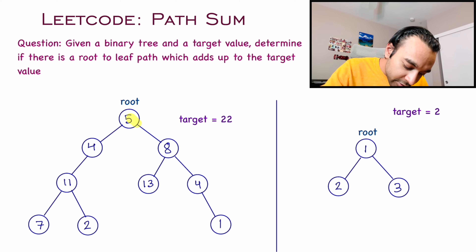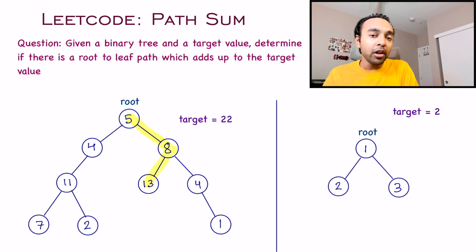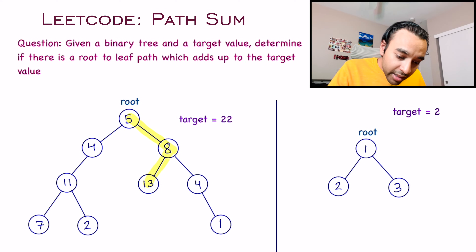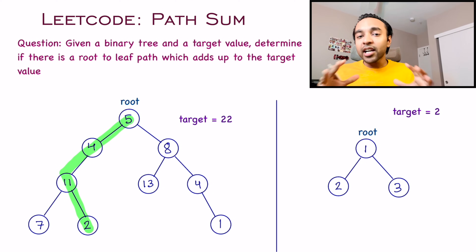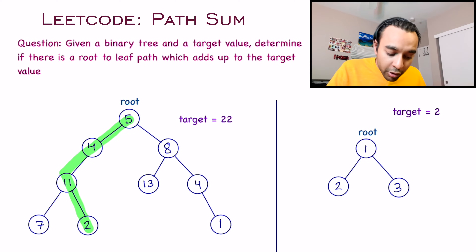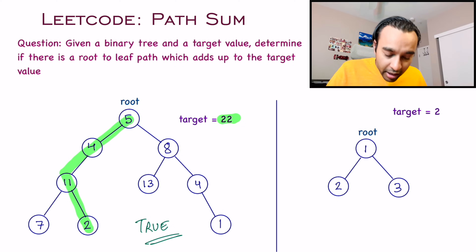For example, one path is 5, 8, and 13 — starting from the root and going all the way to a leaf. In this particular test case, if you travel through the path of 5, 4, 11, and 2, and add up all of them, you get the value 22. So in this test case, you can write down true as your answer.